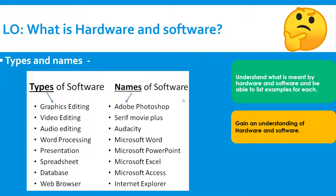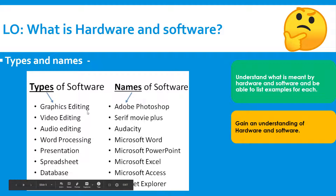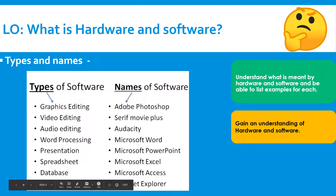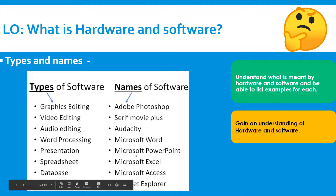There are two types of software: types of software and names of software. The types of software include things like graphics editing, video editing, and audio editing. The types are quite broad — in terms of graphics editing, there are loads of editing software, like Photoshop, Draw Plus, GIMP, and others. Names are specific examples of each type. For example, an example of graphics editing is Photoshop. An example of video editing is Serif Movie Plus. An example of spreadsheet software is Excel.